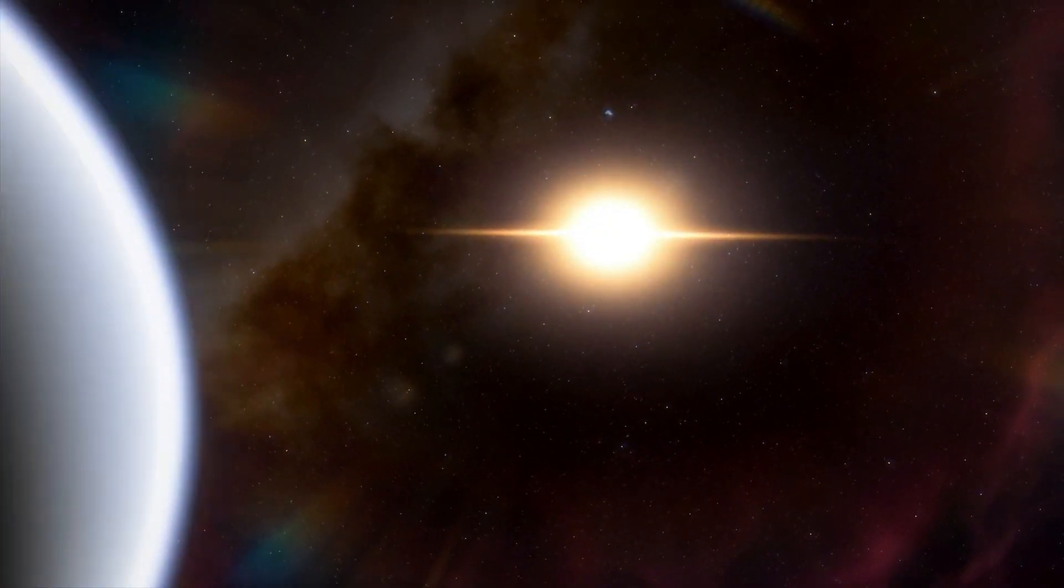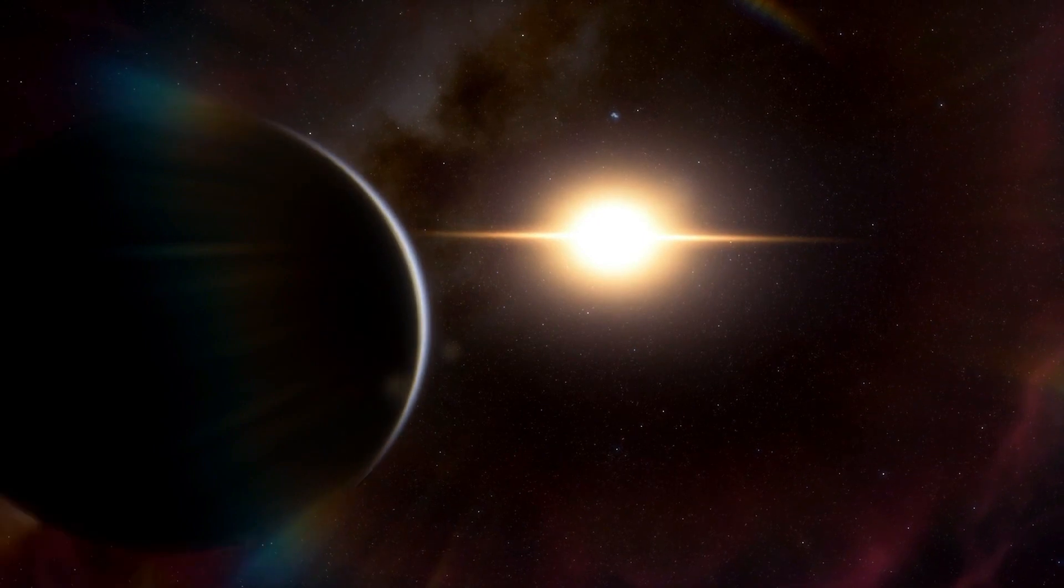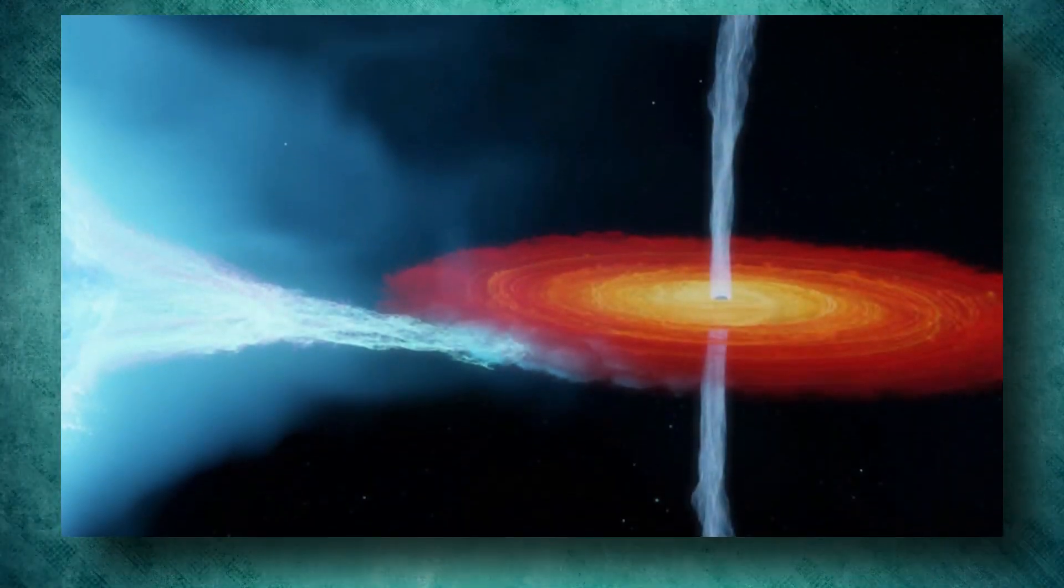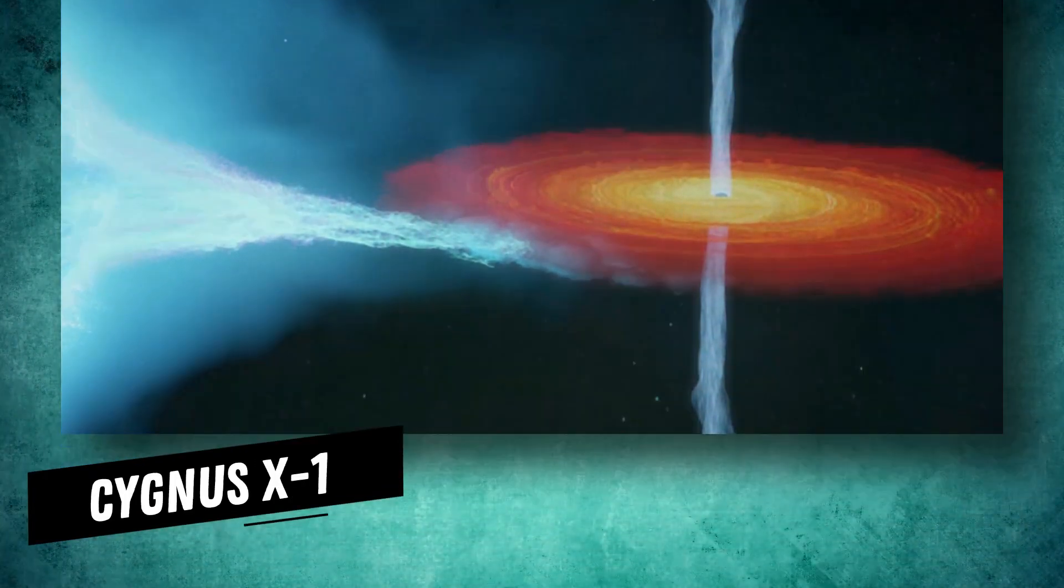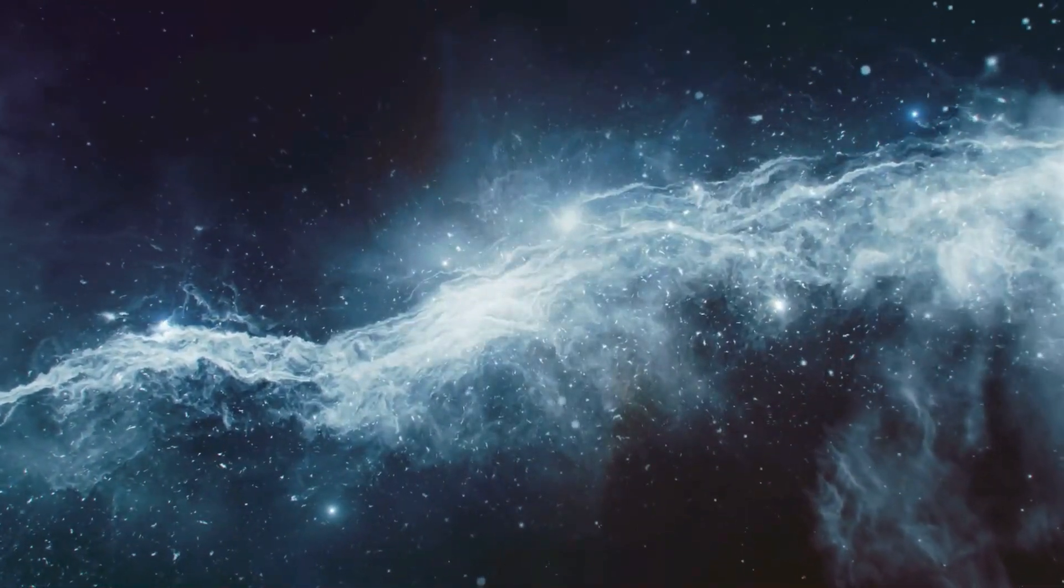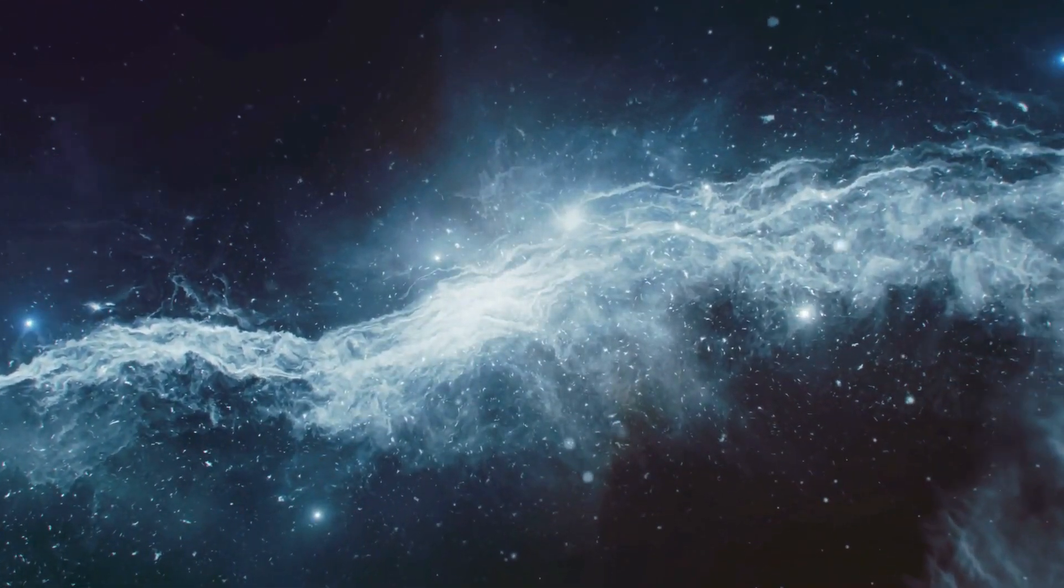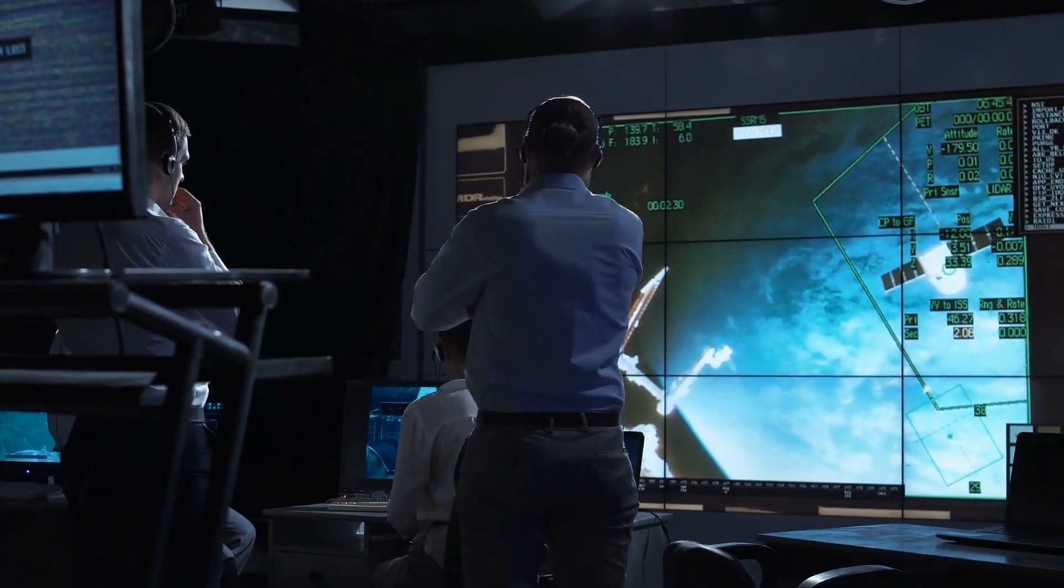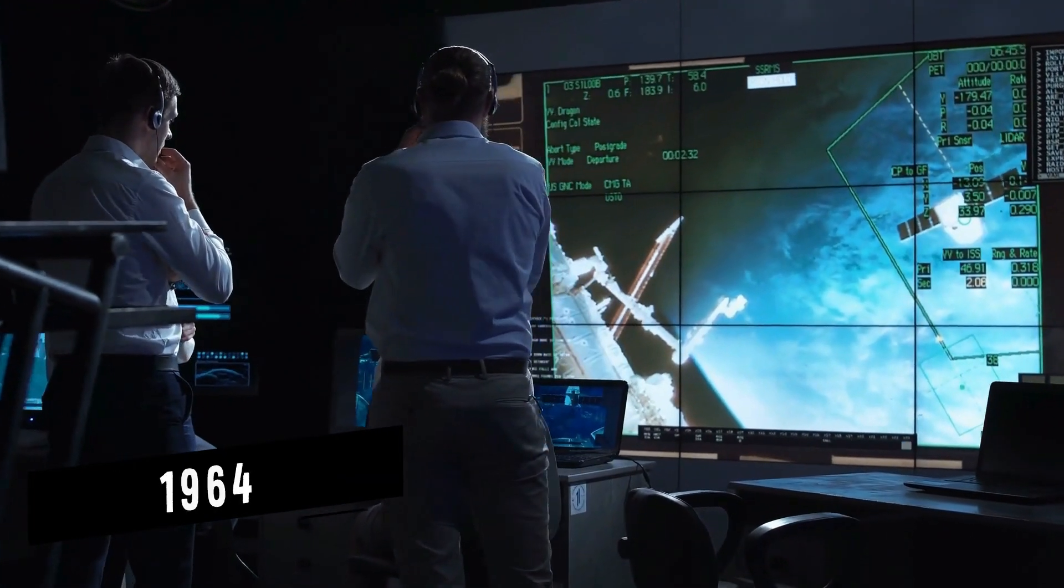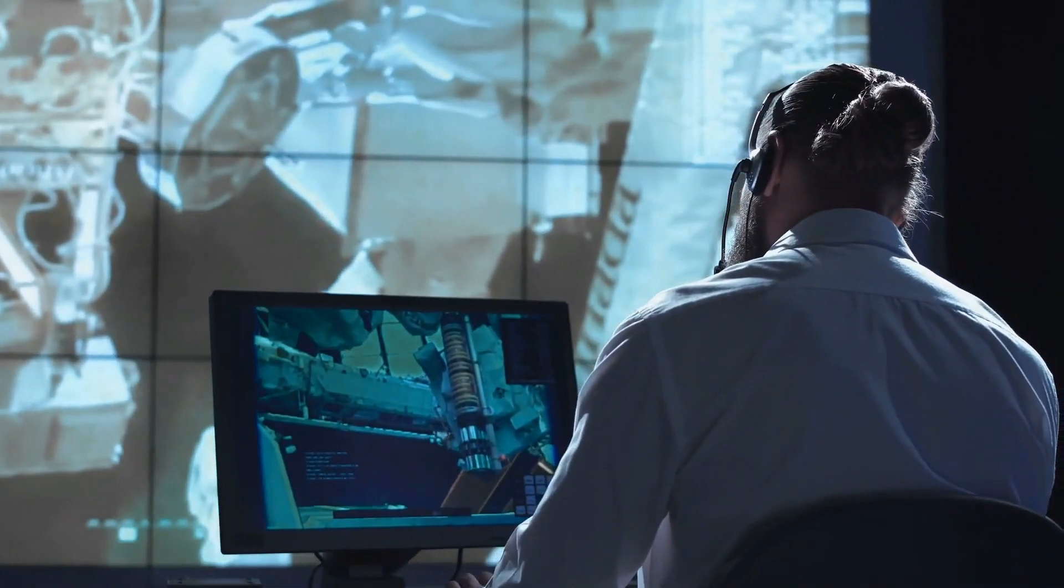After decades of black holes being known only as theoretical objects, the first black hole ever discovered was Cygnus X-1, located within the Milky Way in the constellation of Cygnus, the Swan.